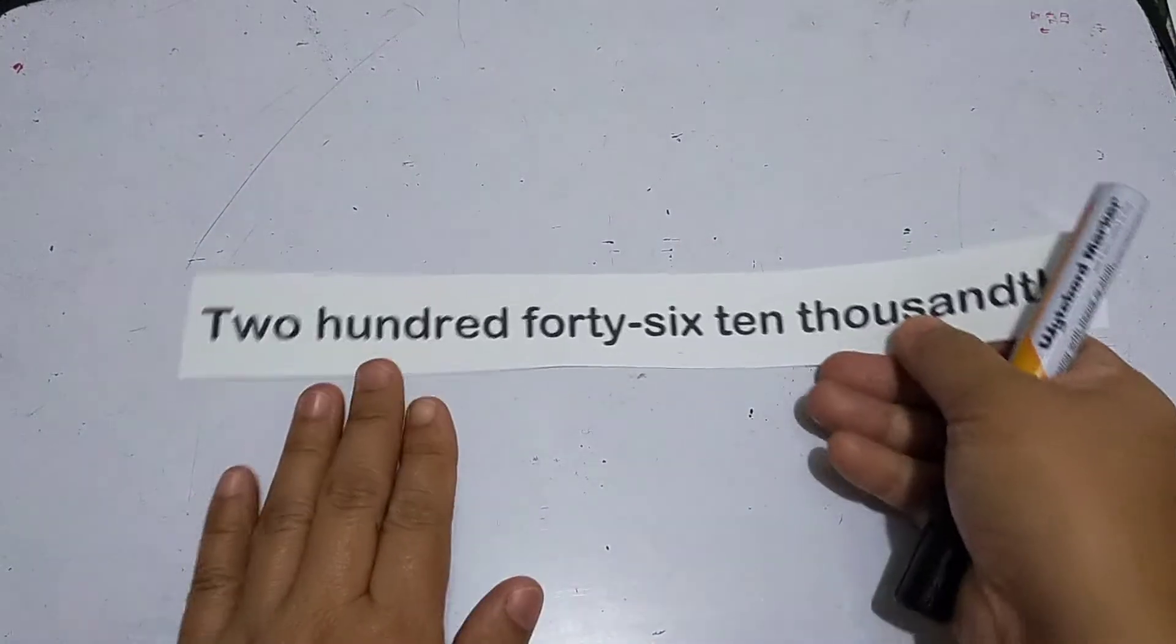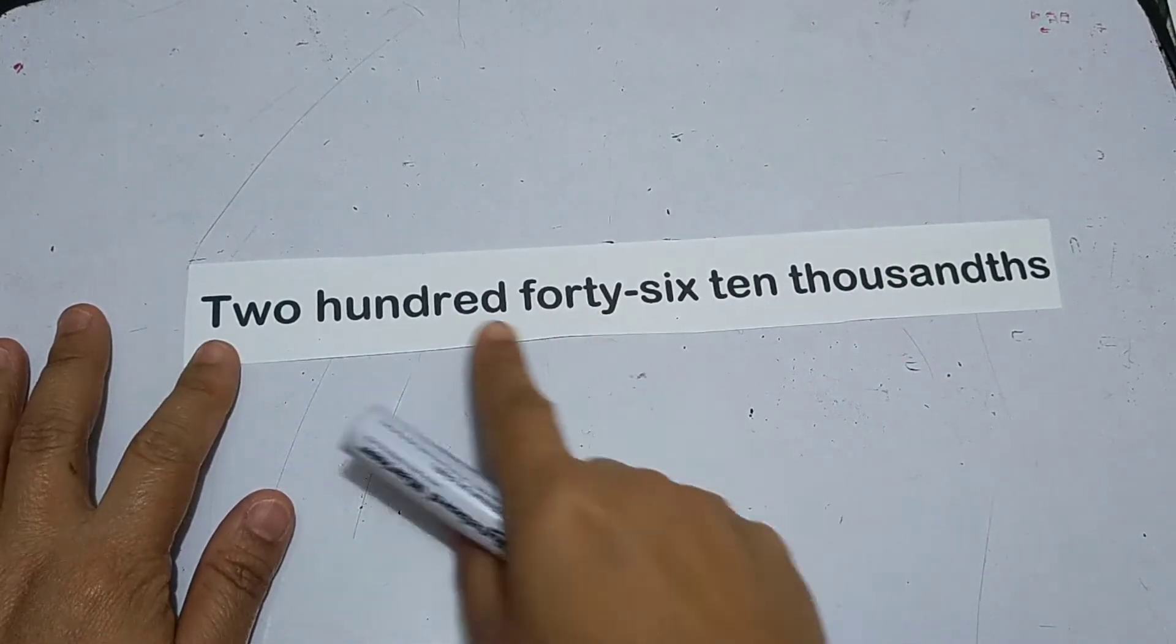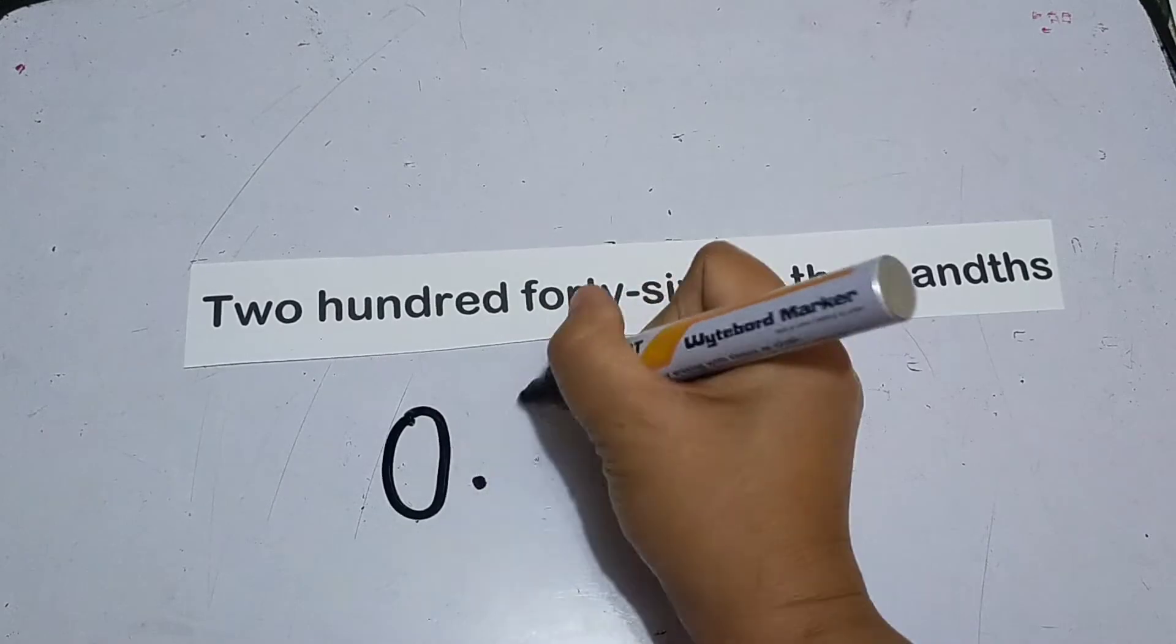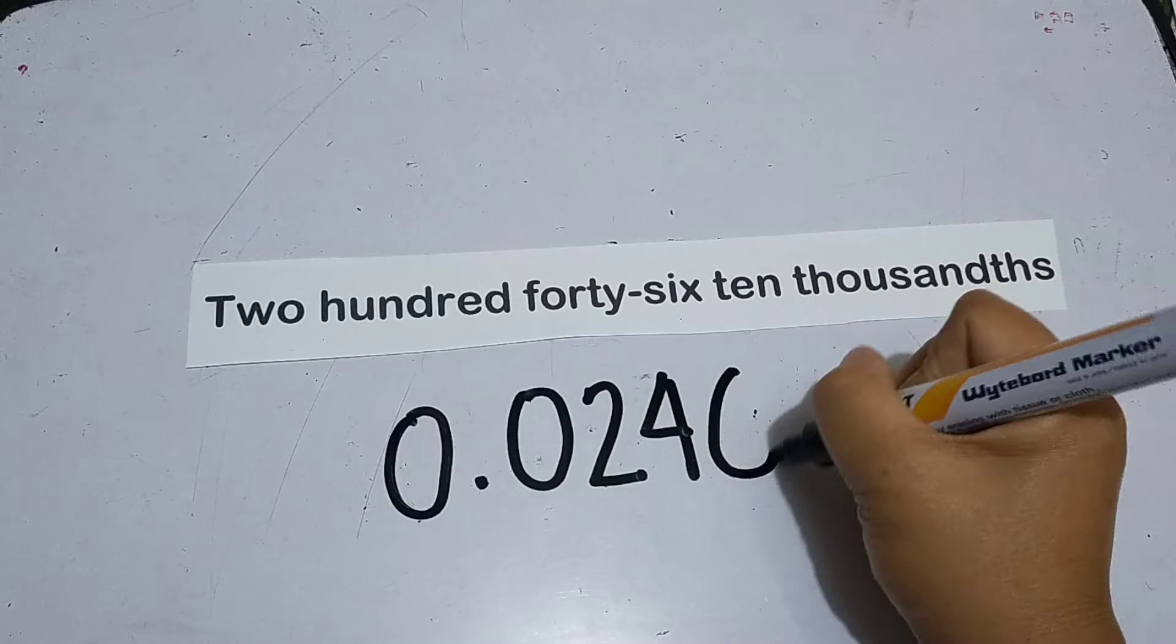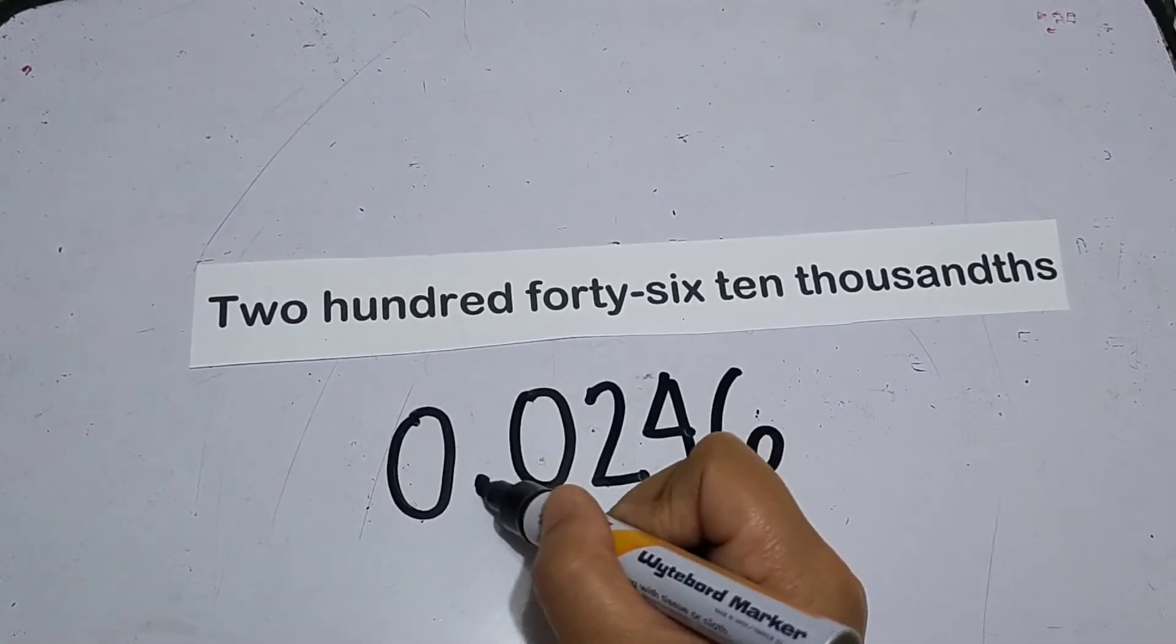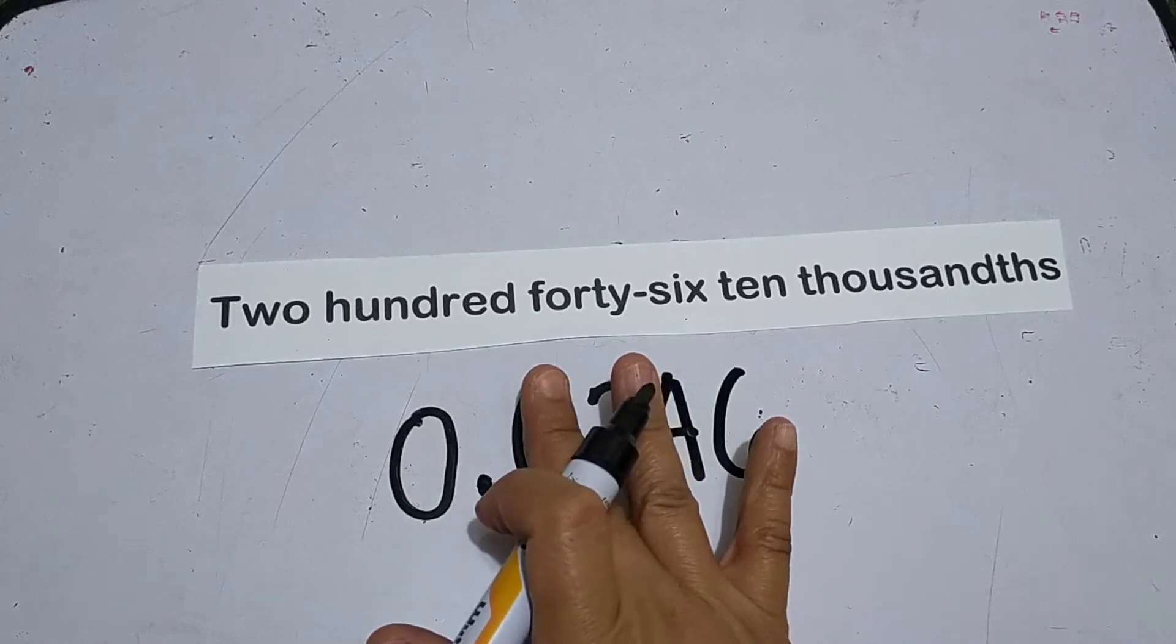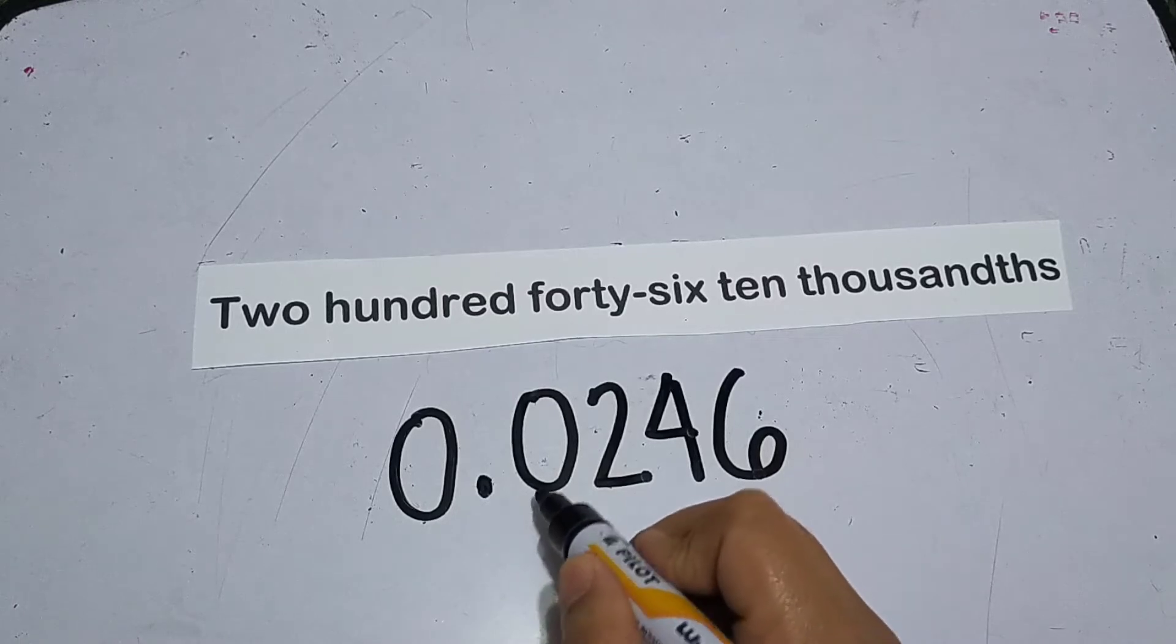Let's say this one. We're going to write this in symbol: two hundred forty-six ten thousandths. How did it become two hundred forty-six ten thousandths? Once you don't put a zero here, the reading will be different.